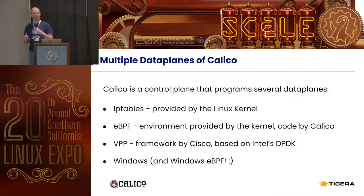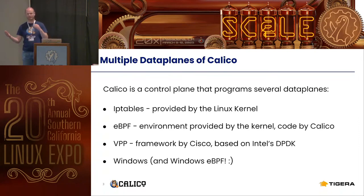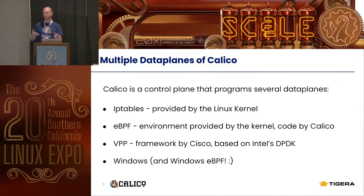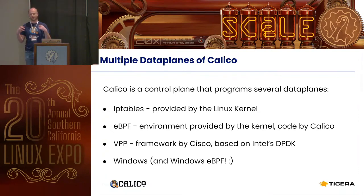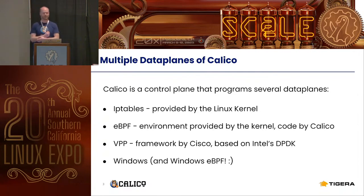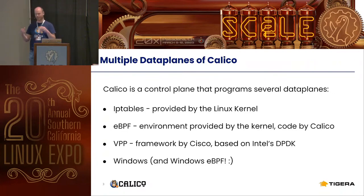Calico has several data planes and can be used in different environments. It started way before Kubernetes with just regular Linux, so it can run on regular Linux in iptables mode where all the data plane is provided by the Linux kernel. Calico goes and writes the iptables rules and Linux executes them.